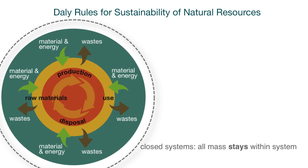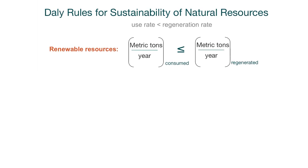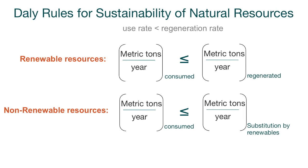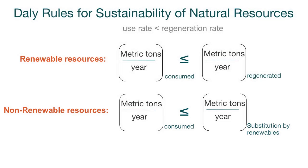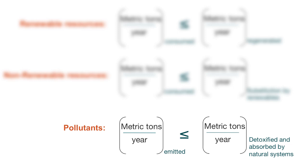Another implication is that all wastes must be absorbed by the system. Within the daily rules for sustainability of natural resources, in order for resources to be renewable, the rate at which they are consumed must be less than the rate at which they are regenerated. For non-renewable resources such as radioactive uranium used for nuclear power, in order to reach a sustainable state, the rate at which non-renewables are consumed must be less than the rate at which they are replaced by renewable substitutes. When considering pollutants, the rate at which they are emitted must be less than the rate at which they are detoxified and absorbed by natural systems.